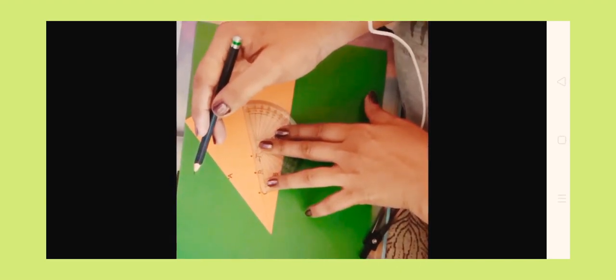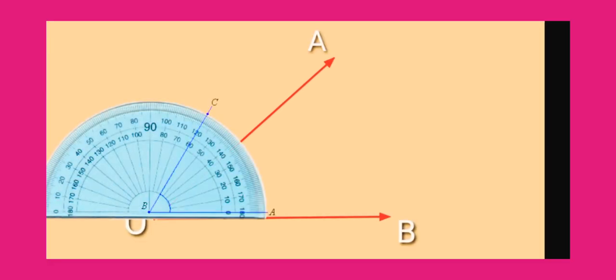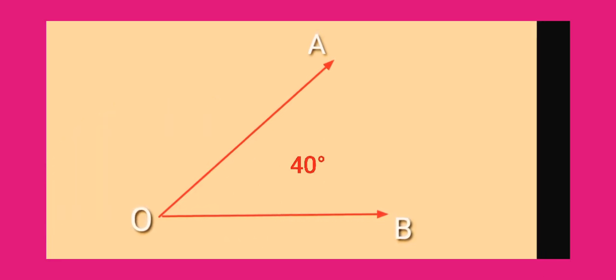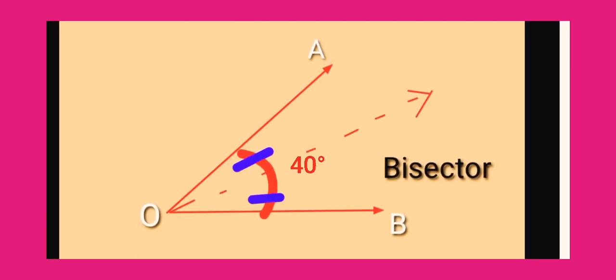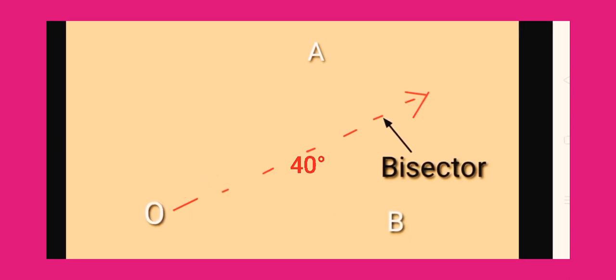Measure the distance of each of these points from A and B. Now I am making this bisector — I have drawn a line on the fold which is a bisector of the angle. This is an angle bisector. This is an angle of 40 degrees, and the dotted line drawn in between is the bisector which divides this angle into two equal parts.